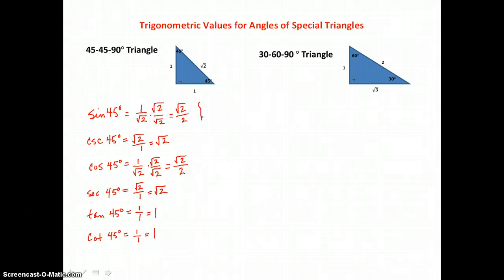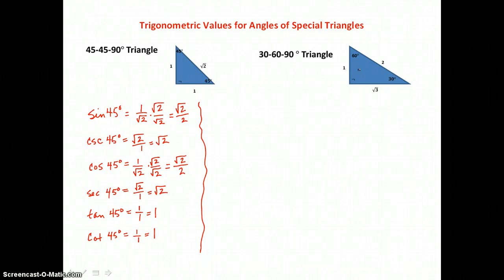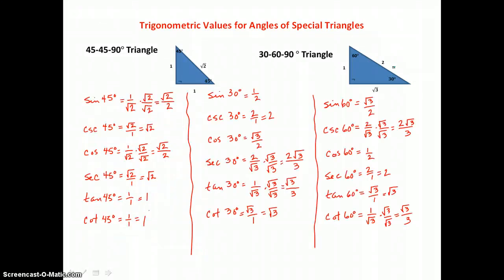We can do the same for the 30-60-90 degree triangle, where the sides are always in the ratio 1 : √3 : 2, with the hypotenuse being twice the length of the shorter leg. The shorter leg is opposite the 30-degree angle. We apply the six trig function definitions to both the 30-degree and 60-degree angles to find special ratios for those angles as well.